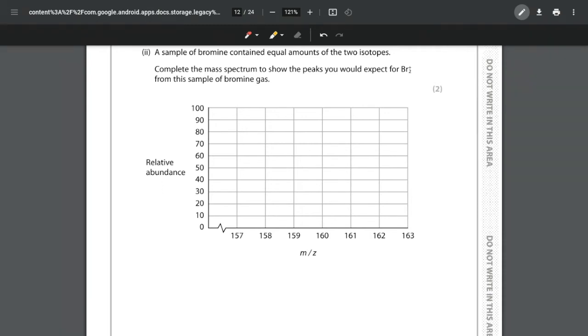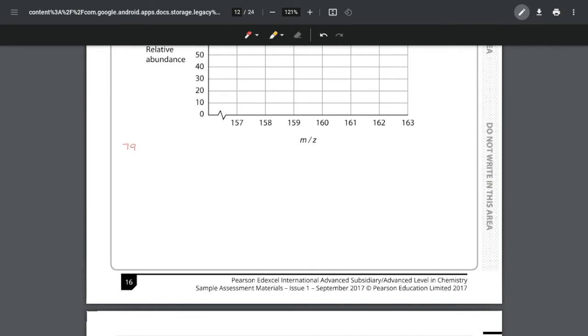We have to look at what the ratio is going to be and where the peaks are going to be. We're told we have equal amounts of the two isotopes—the 79 is 50% of the sample and the 81 is also 50% of the sample.